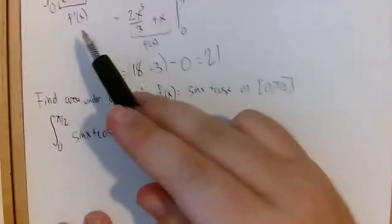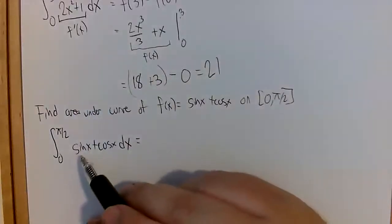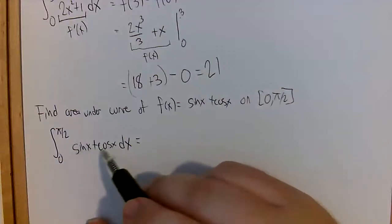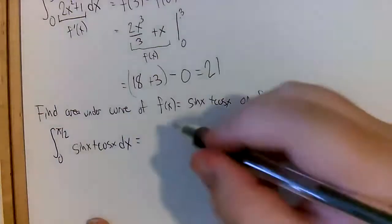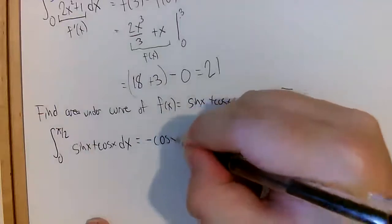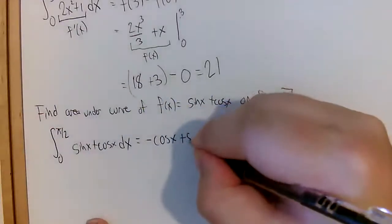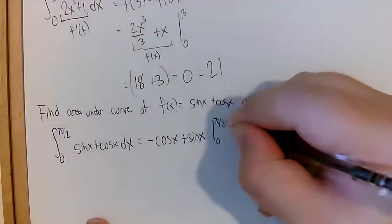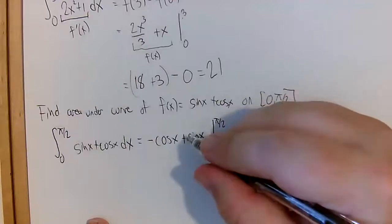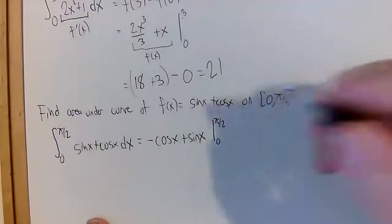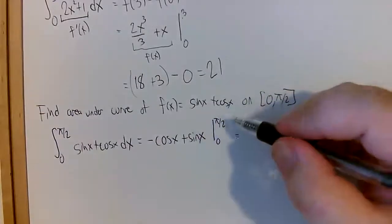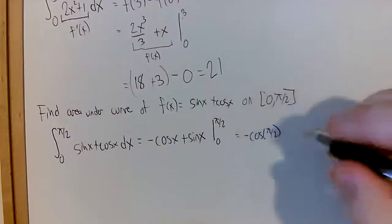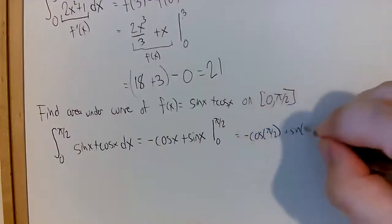I'm going to find the antiderivative of the integrand. The antiderivative of sine is negative cosine of x, and the antiderivative of cosine is sine of x. I'm going to plug in pi/2 into this antiderivative and then subtract when I plug in zero — that's what the evaluation line with numbers means. Plugging in pi/2: we get negative cosine of pi/2 plus sine of pi/2.